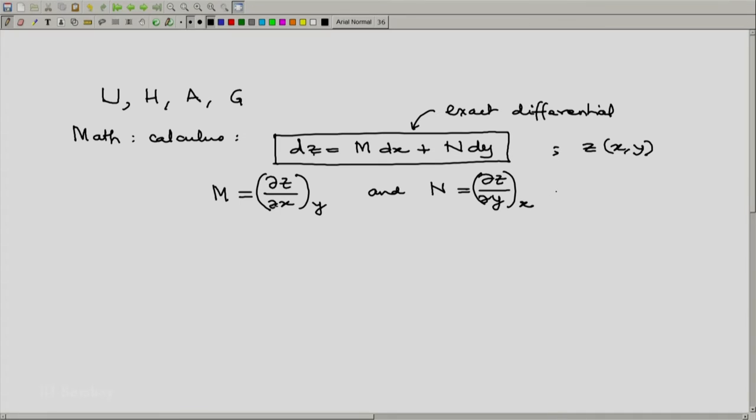Continuing with this, if this on the right hand side is an exact differential, then m must be partial of z with respect to x at constant y, n must be partial of z with respect to y at constant x. And the crossed second partial derivatives must be independent of the order of differentiation.